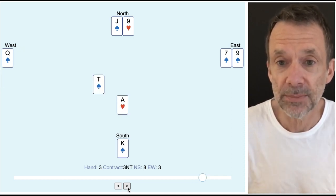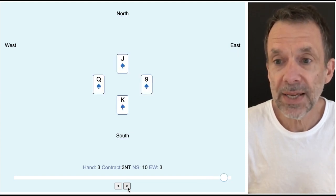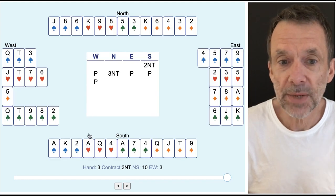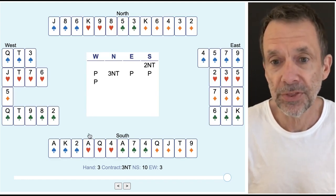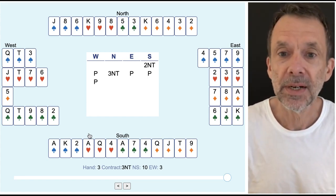Remember I had the ace of clubs in my hand to start with. So this hold up play, we were being careful just in case one player had five and the other player had three. Good we made it. Let's calculate the score.